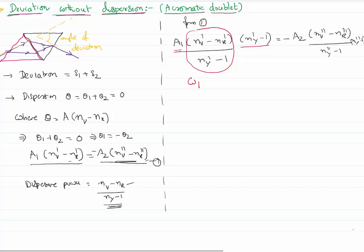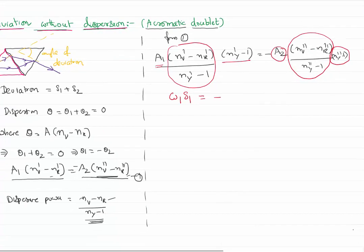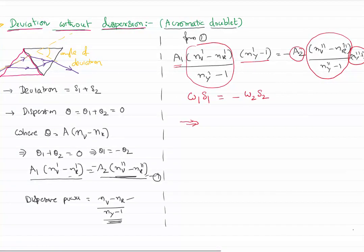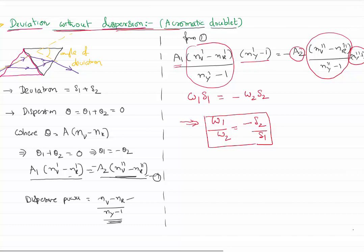So if you arrange the two prisms such that dispersive power of the first prism divided by dispersive power of the second prism equals minus deviation of the second prism divided by deviation of the first prism, then the prism combination will produce only deviation without any dispersion. The output of the system will have only one color, and this phenomenon is called achromatism. This is how we can use a combination of two prisms to get deviation but without dispersion.